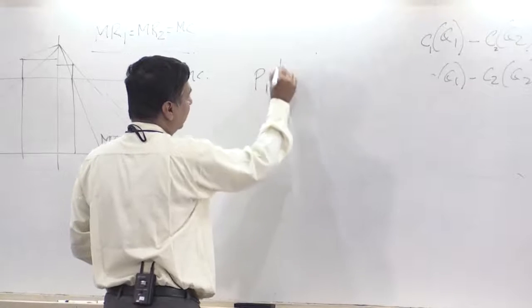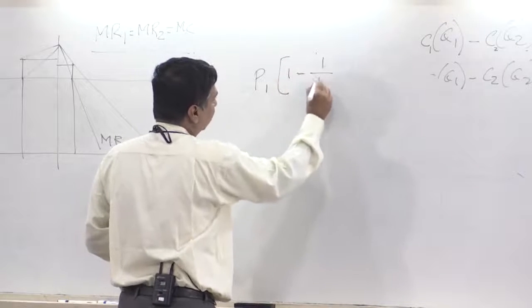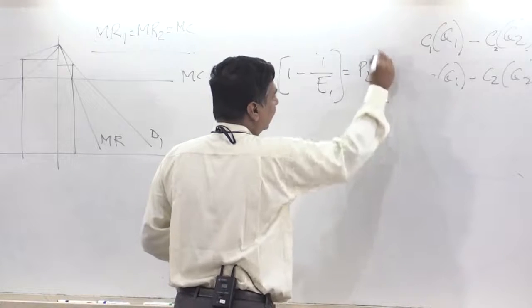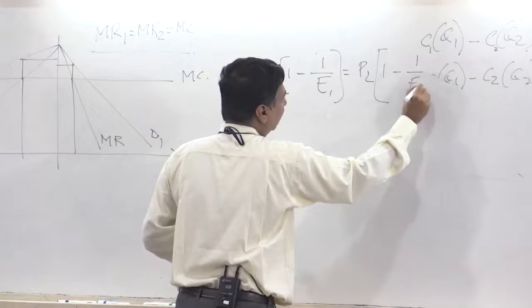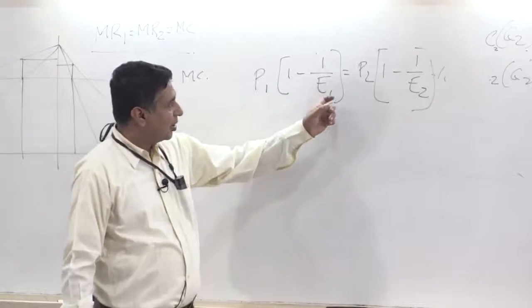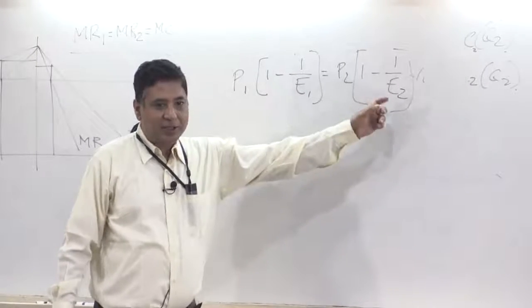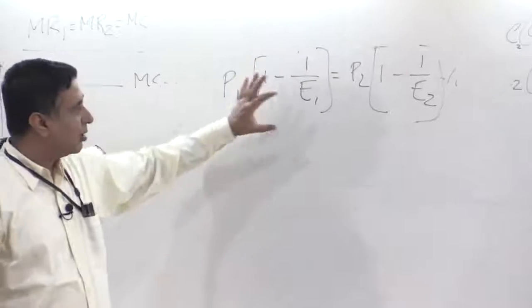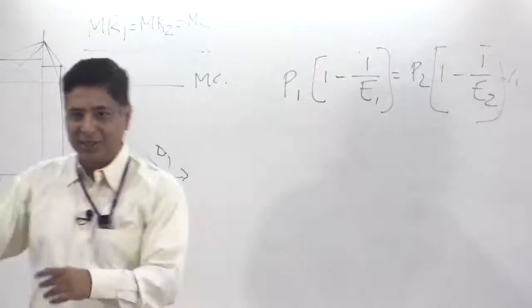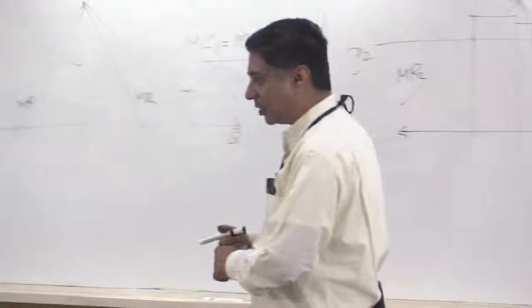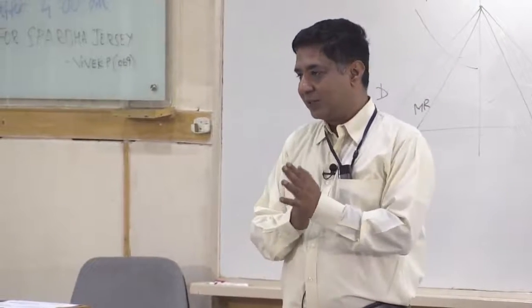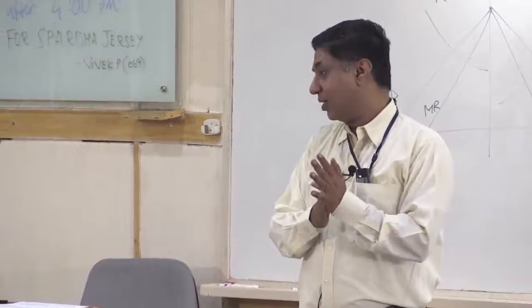Say P1 into 1 minus 1 over E1 should be equal to P2 into 1 minus 1 over E2. So that means suppose E1 is greater than E2, then you can show that P2 will be greater than P1. Just manipulate this and you should be able to get that. The more inelastic market will have the higher price.